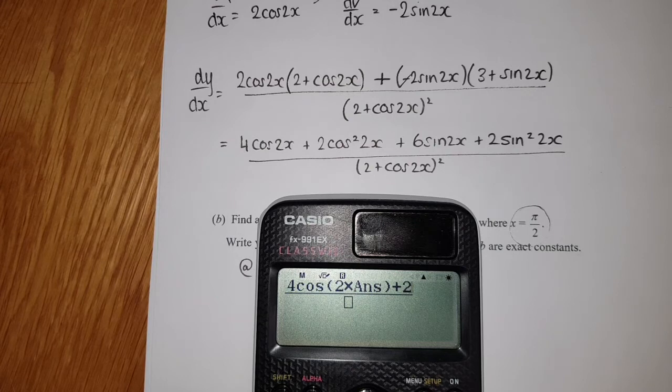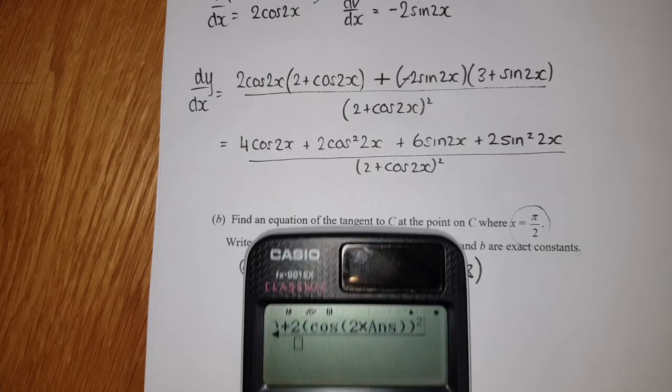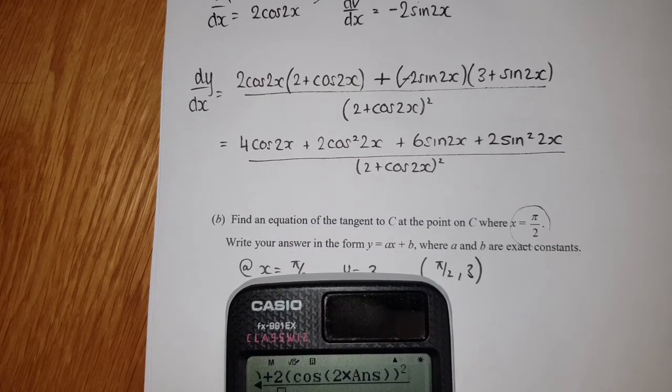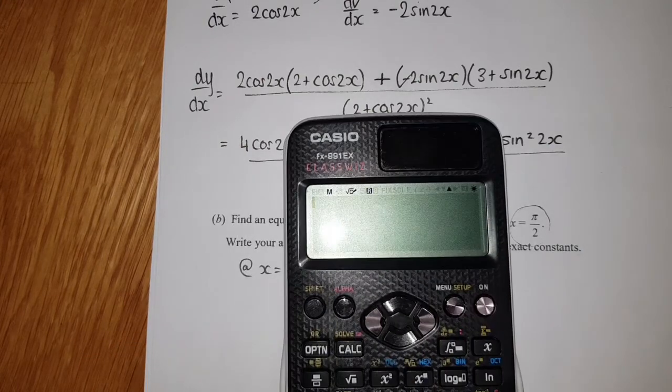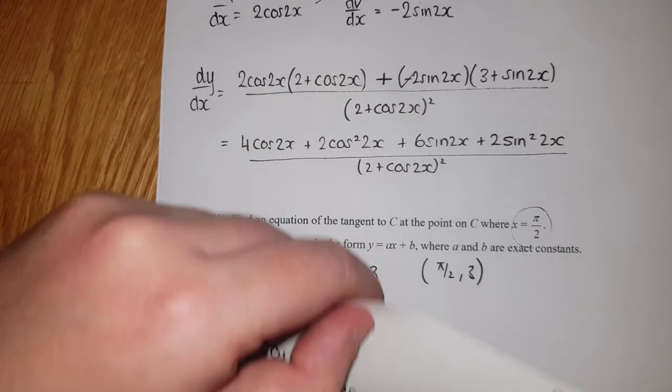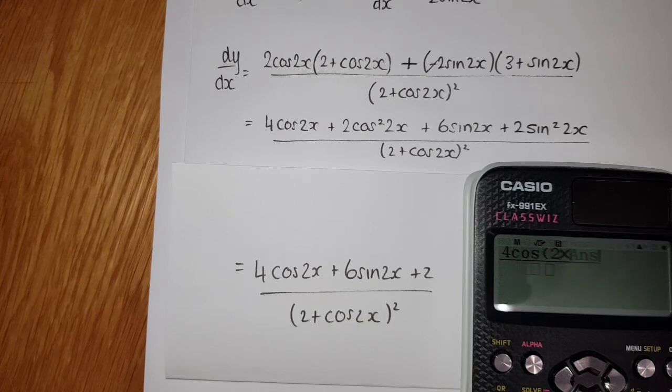So you get 4cos of 2 times the answer plus 2, and you are going to have to do cos of 2 times the answer and then square the whole thing. Oh, I skipped one—sorry, let's try that again. So I forgot that I finished the question off. We get 4cos(2 times the answer) + 6sin(2 times the answer) + 2 on the top.